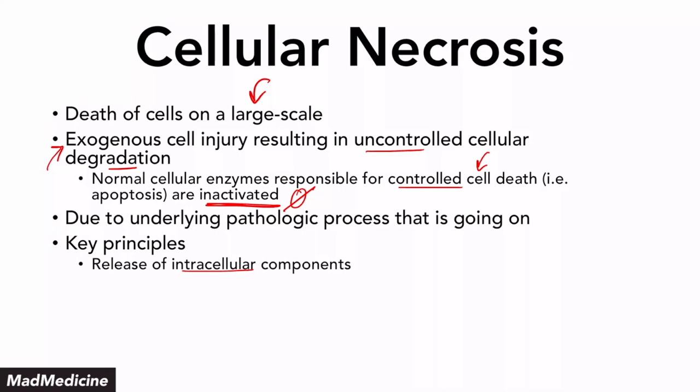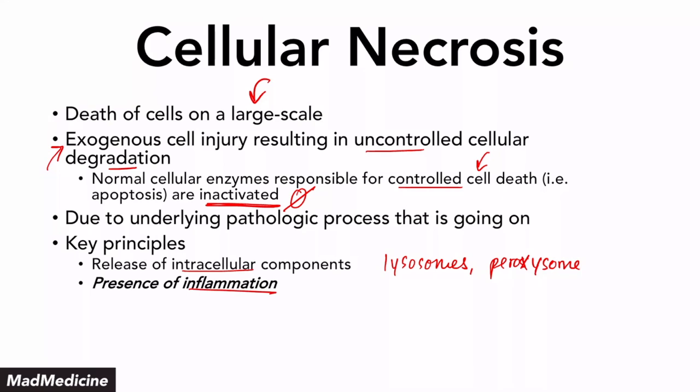Some of those intracellular components are very damaging to the nearby cells — those are going to be things that are in lysosomes or peroxisomes. The enzymes within these organelles are going to be released, and that's going to cause inflammation. Very important: in necrosis, you are going to have inflammation occur. In apoptosis, there's not going to be inflammation really occurring because it's already programmed — the cell knows it's going to die.